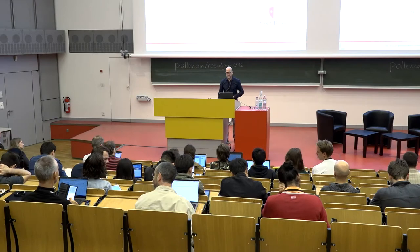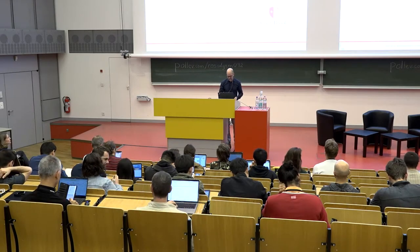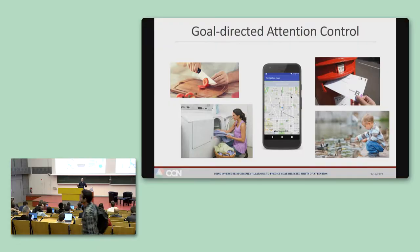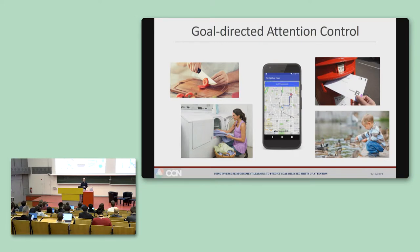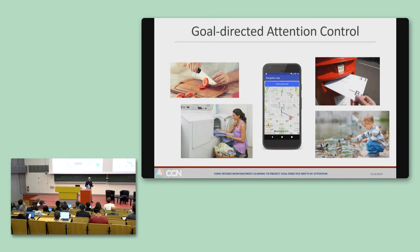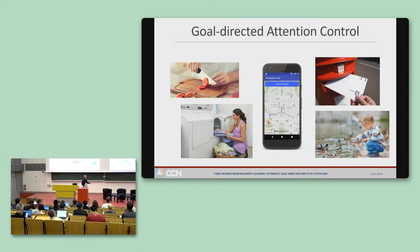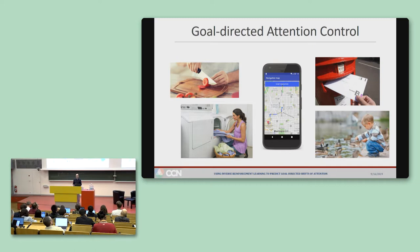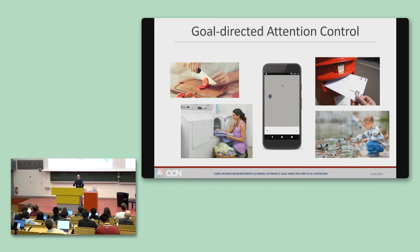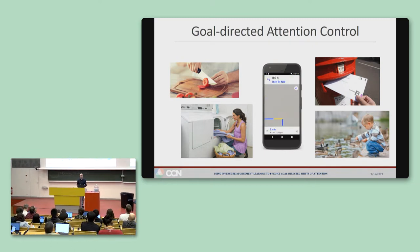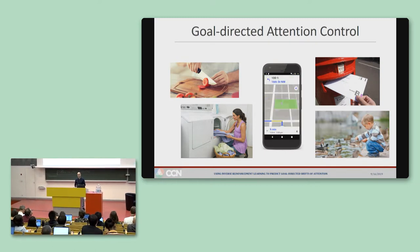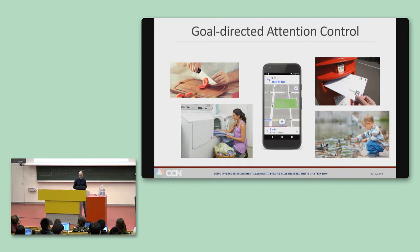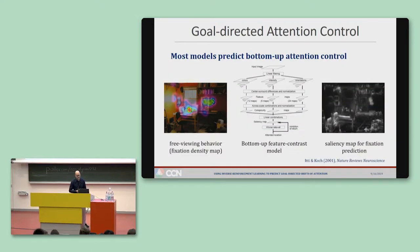The behavior that we're trying to understand is goal-directed attention control, which underlies all the things that we try to do, from making dinner to navigating across town. Understanding this goal-directed control is likely key to understanding any intelligent system, be it human or machine.